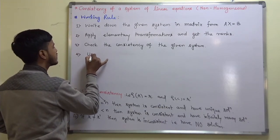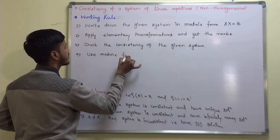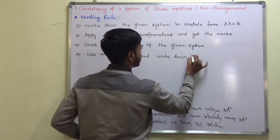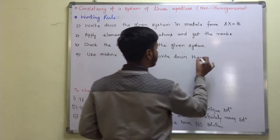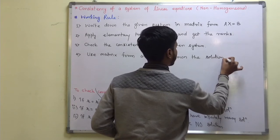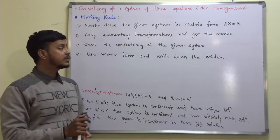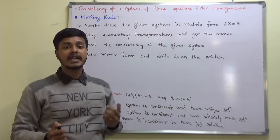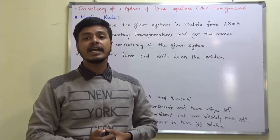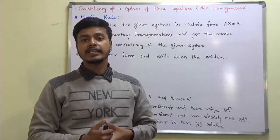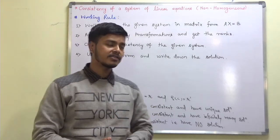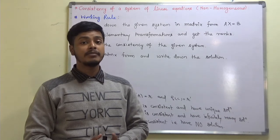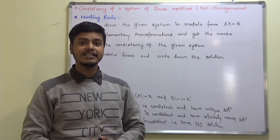At last, use the matrix form and write down the solution. This is a very simple working rule for the consistency of a system of linear equations. You just write the matrix form first, apply elementary transformations to get the ranks, check consistency, and write down the solution — provided you know how to find the rank of a matrix and are good at elementary transformations. Thank you for watching this learning video and happy learning.